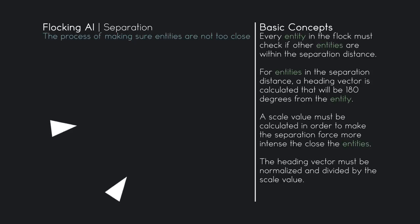Let's discuss this concept in great detail. I'm going to put up two entities: one entity has an x value of 11 and a y value of 19, and another entity has an x value of 23 and a y value of 32. The 11,19 entity looks at every other entity in the flock — in this case the 23,32 entity — and checks if it's within the separation distance.